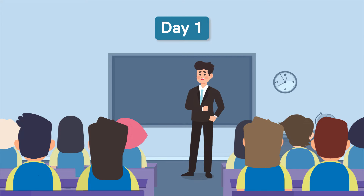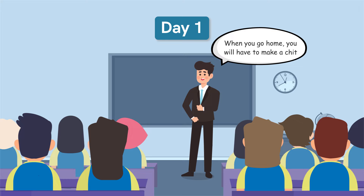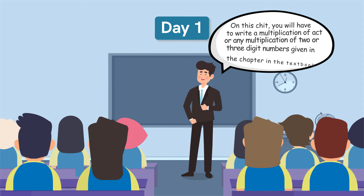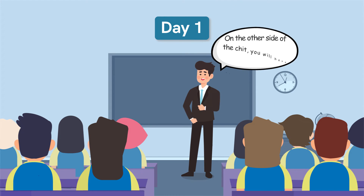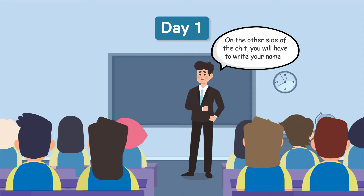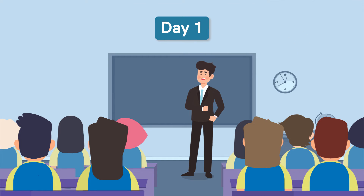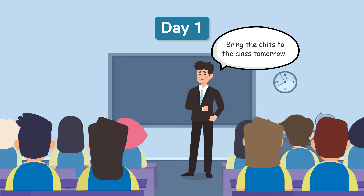A day prior to the revision, we have to ask the students to do as directed below. Tell the students that when they go home, they have to make a chit. On this chit, they will have to write a multiplication fact or any multiplication of two or three digit numbers given in the chapter in the textbook. On the other side of the chit, the students should write his or her name. Tell all the students to bring the chits to the class the next day.